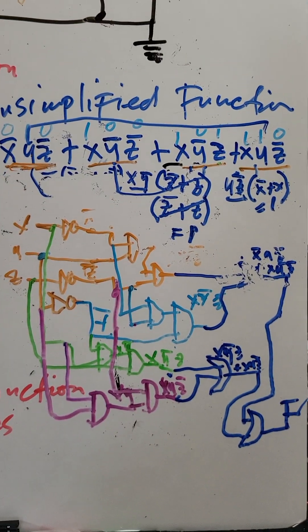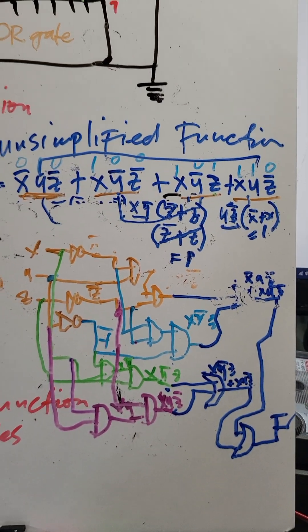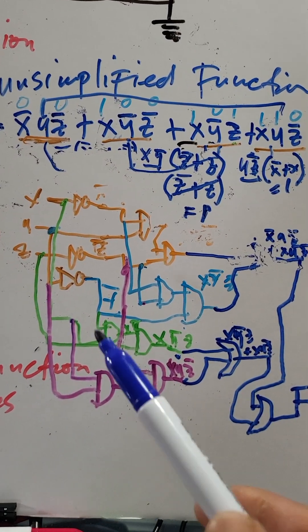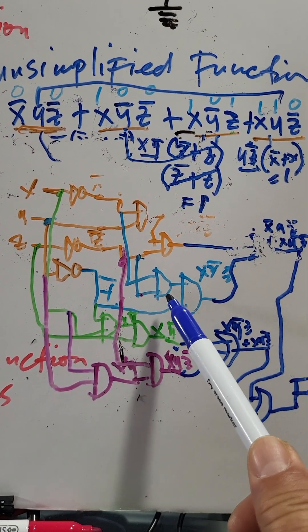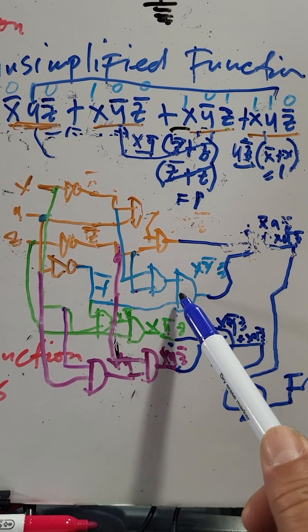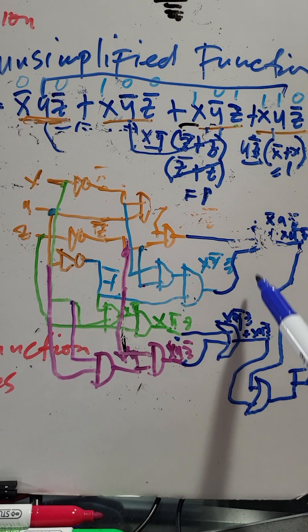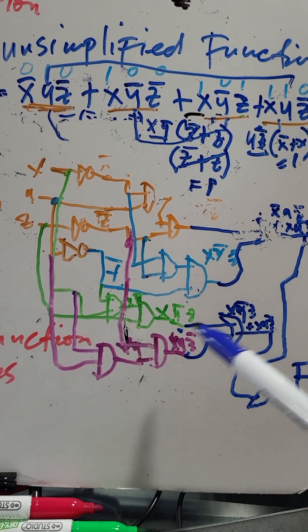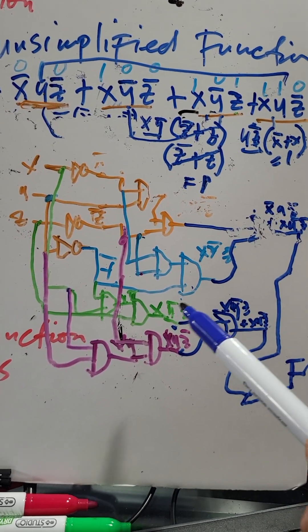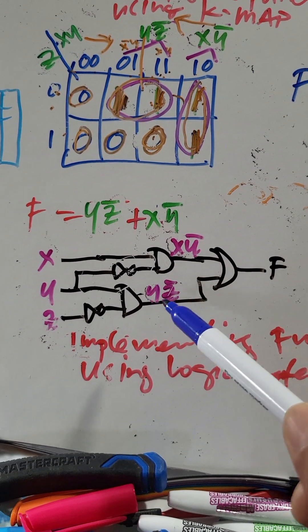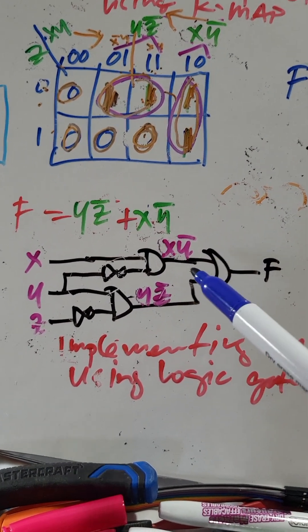You see guys the difference? The difference of unsimplified function implementing two inputs gates, limited input gates, you can have lots of gates. You can use lots of gates, like it's 15 or 16 gates. And this one is only 5 gates. Same output.